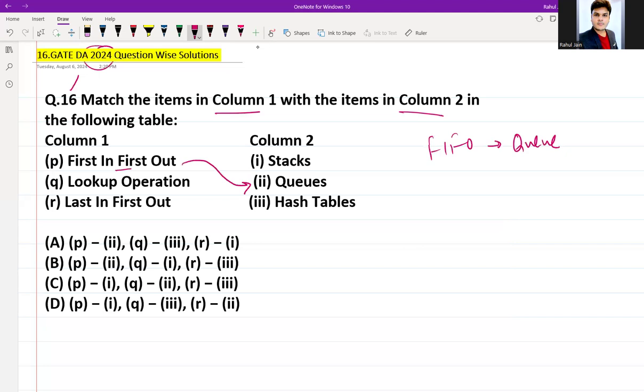Thereafter, Last In First Out - LIFO, or we can call it First In Last Out. You know this is a property of basic data structures, so that is one.